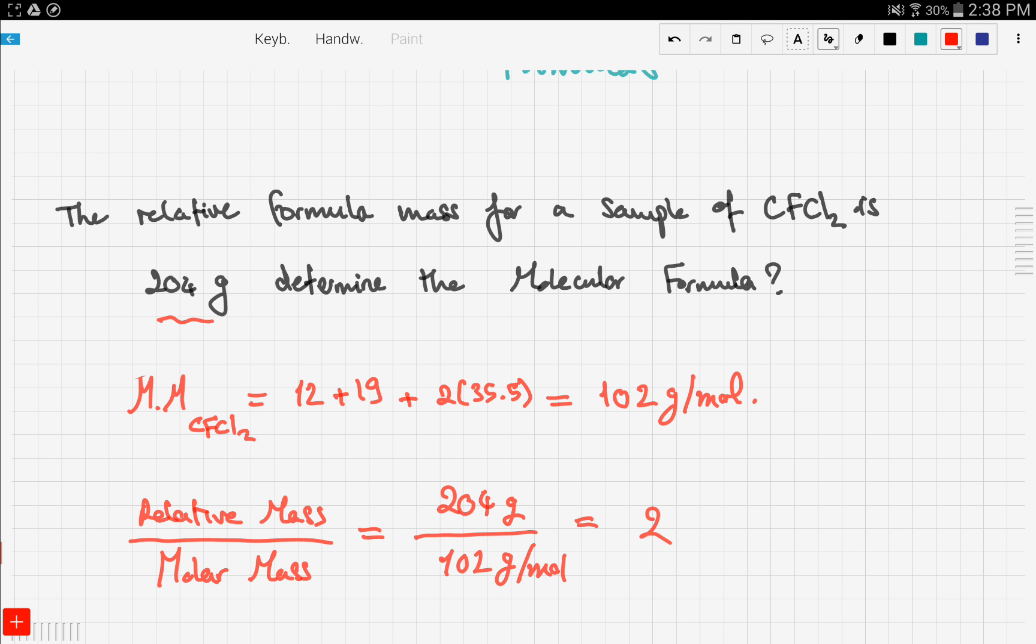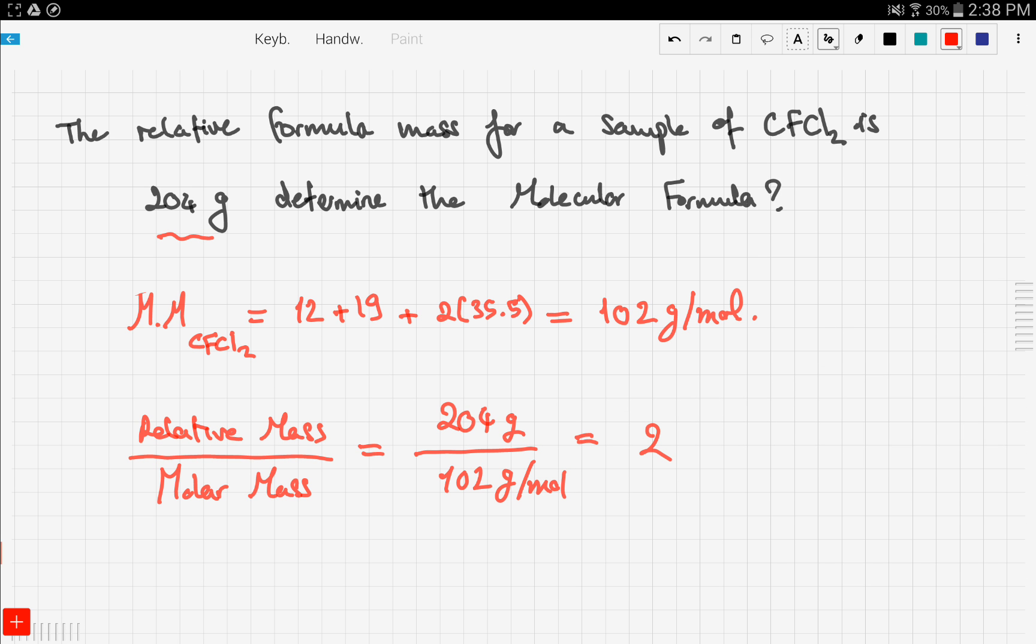So that would be multiplying everything in the CFCl2 by 2. So we get C2F2Cl4. You multiply the subscripts of each element.